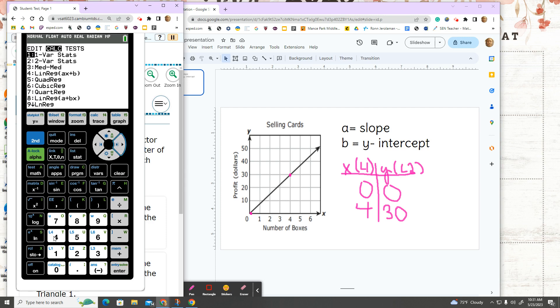I'm going to go over to calc, hit the number 4, and then enter all the way down until I get something that looks like this. So A in your calculator is your slope, B in your calculator is your y-intercept.